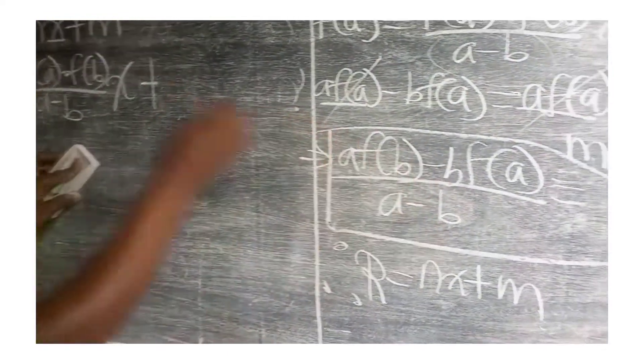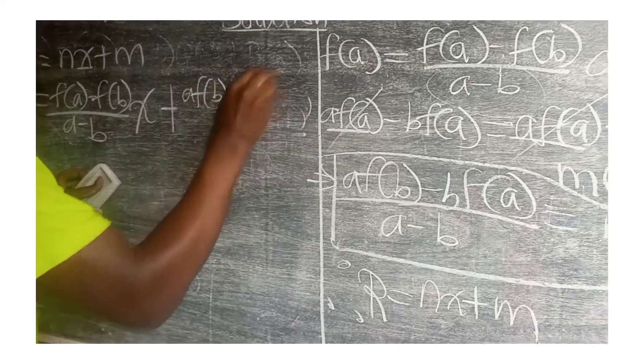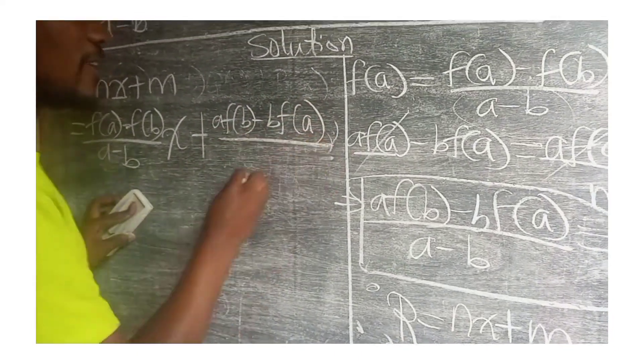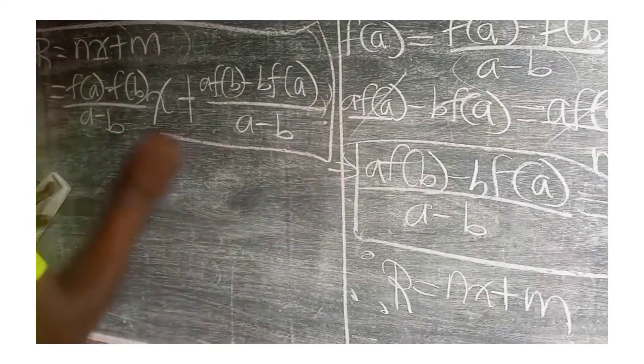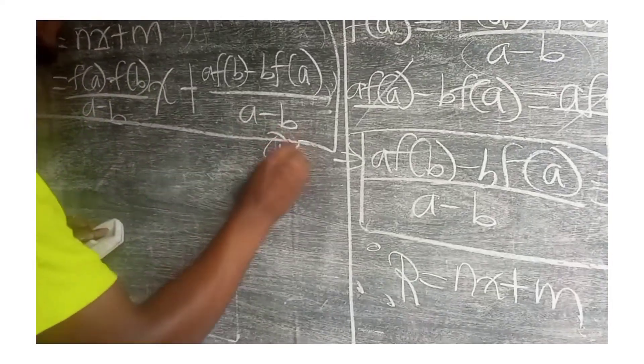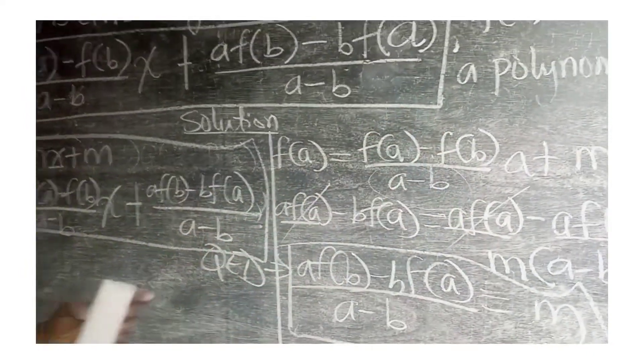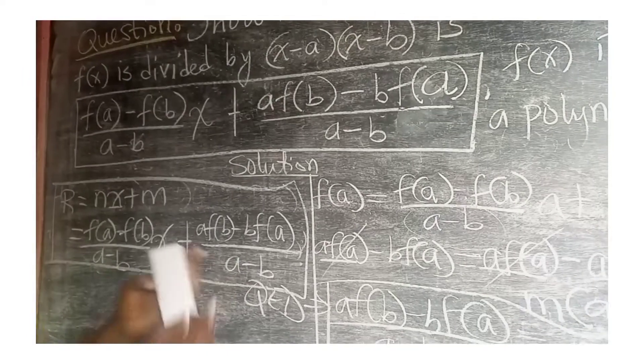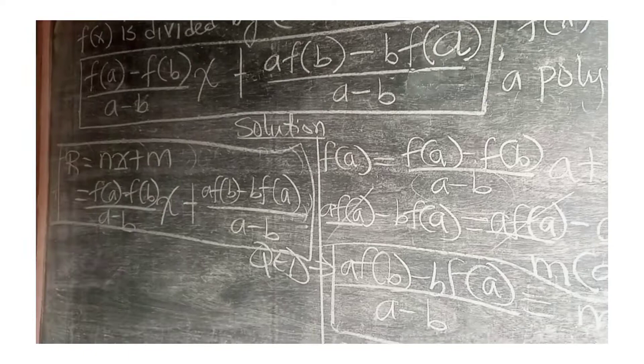This is m, now we found m here, a·f(b) - b·f(a), all that on a-b, which is the desired proof, as you can see. But you can also choose to take the LCM here and then express it in a nicer way, if you like.